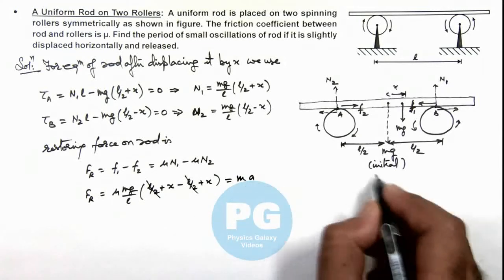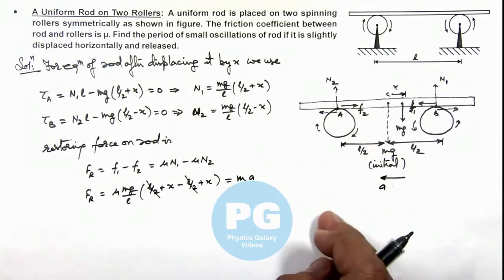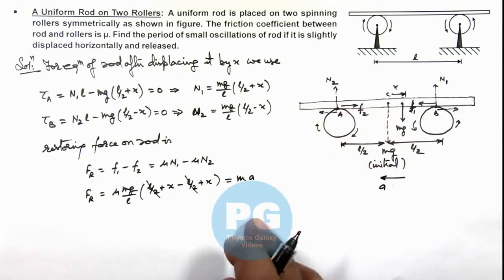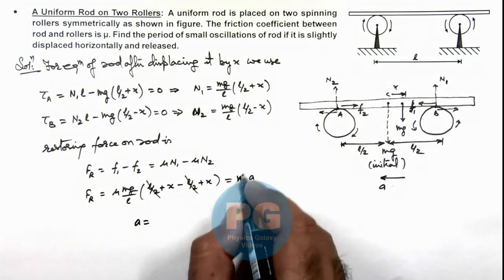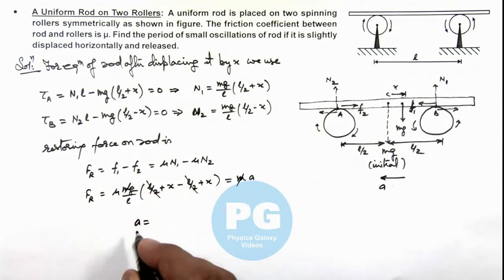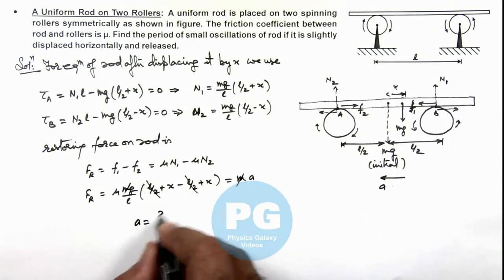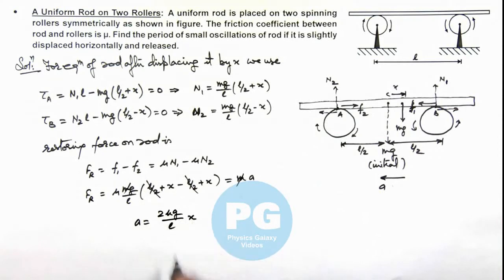If a is the acceleration of rod with which it is having a tendency to return back, this gives us acceleration is equal to, here we can cancel out m, and this will be (2μg/L) multiplied by x.